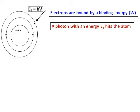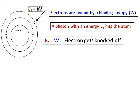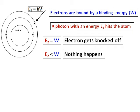This energy E2 can be represented as E2 equals h nu. When this happens, either E2 can be equal to W. In that case, electron gets knocked off. If E2 is less than W, actually nothing happens. And the third case, when E2 is greater than W,